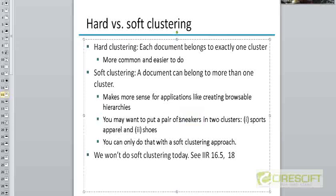For example, if there's a document dealing with sneakers, it could fall into two clusters, one cluster corresponding to sports documents, sports apparel, and the other corresponding to shoes. So we are not going to talk about soft clustering. We are going to assume that each document falls into one and only one cluster.